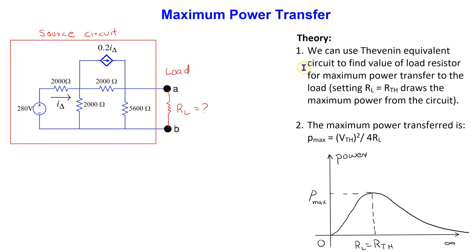We can use the Thevenin equivalent circuit technique to find the value of the load resistor that will draw maximum power from the source. Setting RL equal to R Thevenin draws the maximum power from the source circuit, and the value of the maximum power transferred to the load is given by this formula shown here. The proof of this result is easily available in elementary circuit theory textbooks.